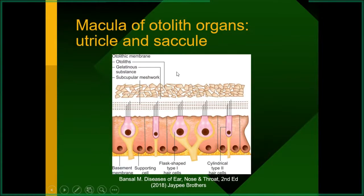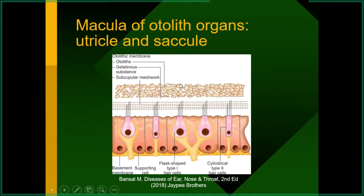The otolithic organs are situated in the utricle and saccule. There are two types of cells: flat-shaped Type I hair cells and cylindrical Type II hair cells. Both have kinocilium and stereocilia embedded in a gelatinous meshwork, with otoconia on top. In cases of benign paroxysmal positional vertigo (BPPV), these otoconia move from their normal position and enter the semicircular canal — most commonly the posterior semicircular canal.